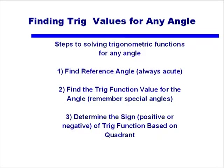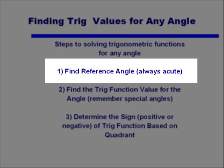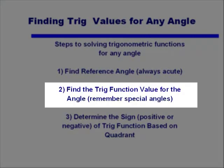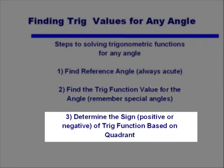To do this, we're going to go through these steps. First, we will find the reference angle — the angle between the terminal side of the angle and the x-axis. This angle is always acute. Second, we'll find the trig function value for that reference angle, using the special angles 30°, 45°, and 60° that you need to memorize. Finally, we determine whether the trig function is positive or negative based on the quadrant and which trig function we're dealing with.